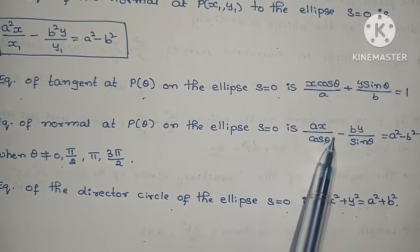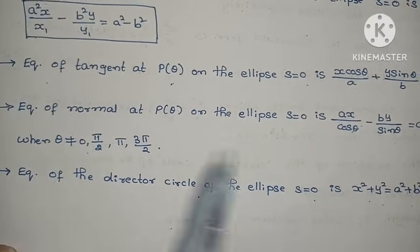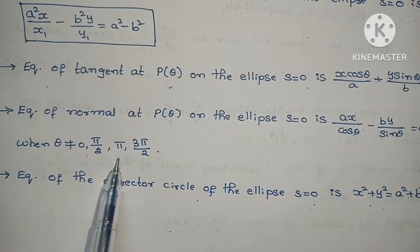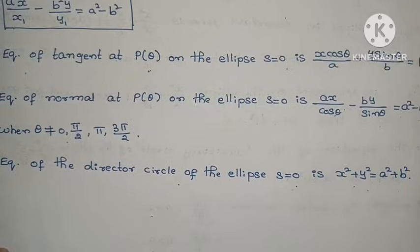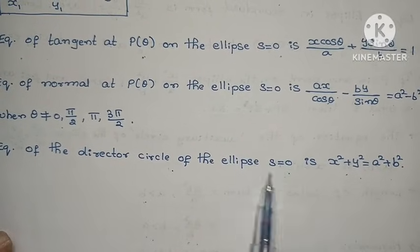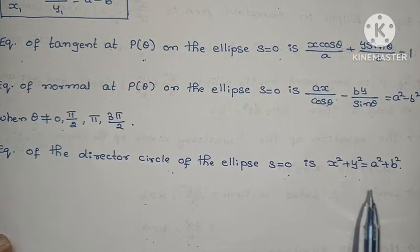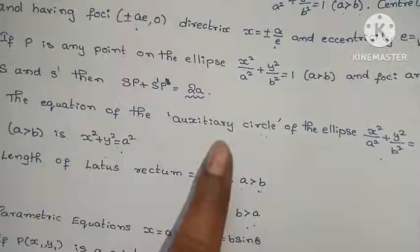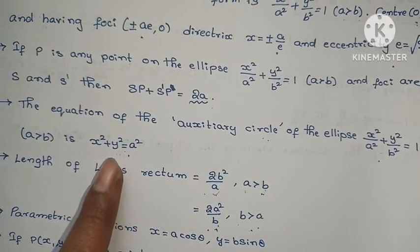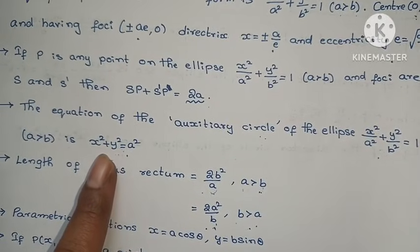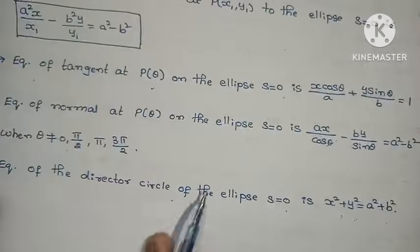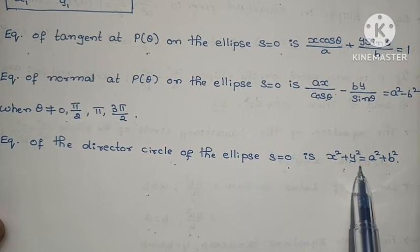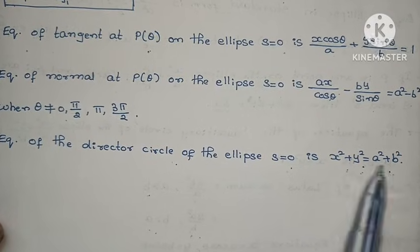Remember these formulas well. Note that the equation of normal is not defined when theta equals 0, pi by 2, pi, or 3pi by 2. The equation of the director circle of the ellipse is x² plus y² equals to a² plus b². The auxiliary circle equation is x² plus y² equals to a².